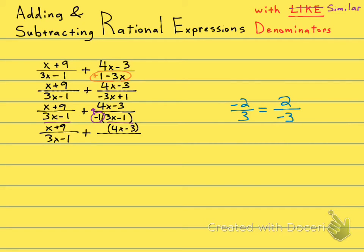x plus 9 over 3x minus 1 plus... Here's my 4x minus 3, and the negative 1 has to go out in the front. Okay? I can't... This negative 1 does not just attach to the 4x, but it's attaching to the minus 3 also. All right? It's going to be the whole numerator that gets the negative 1. All right, so my denominator now is 3x minus 1 without the negative. Now I'm happy because I have a common denominator.